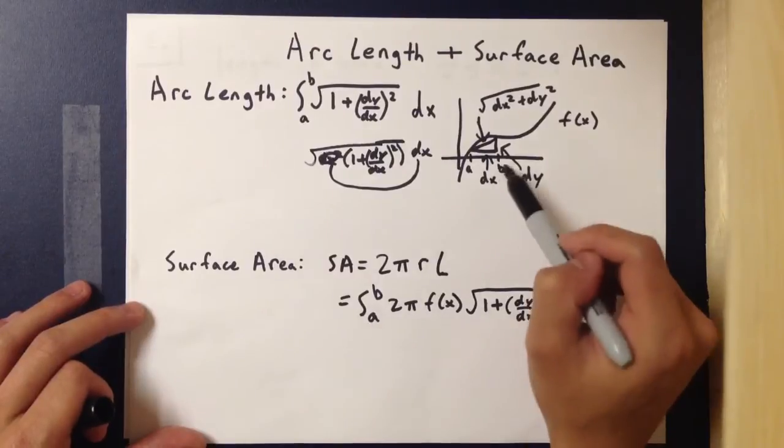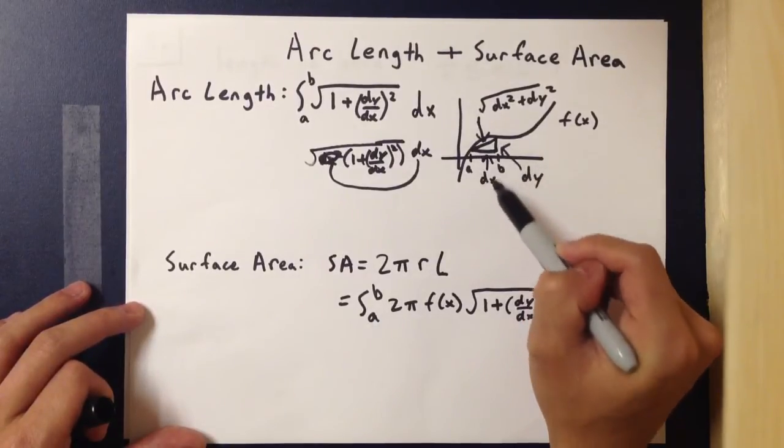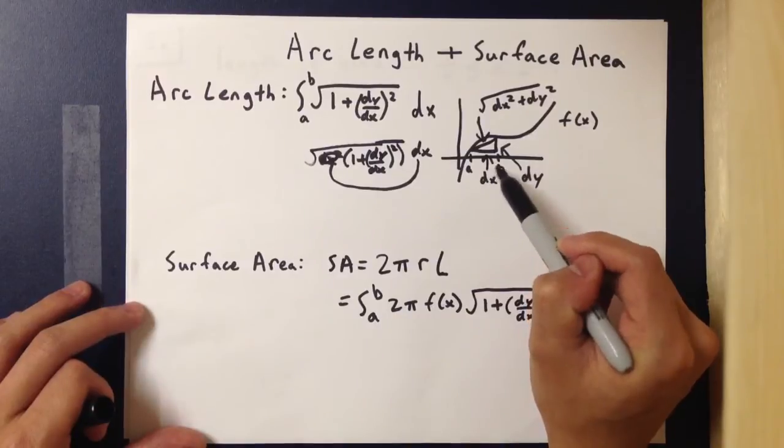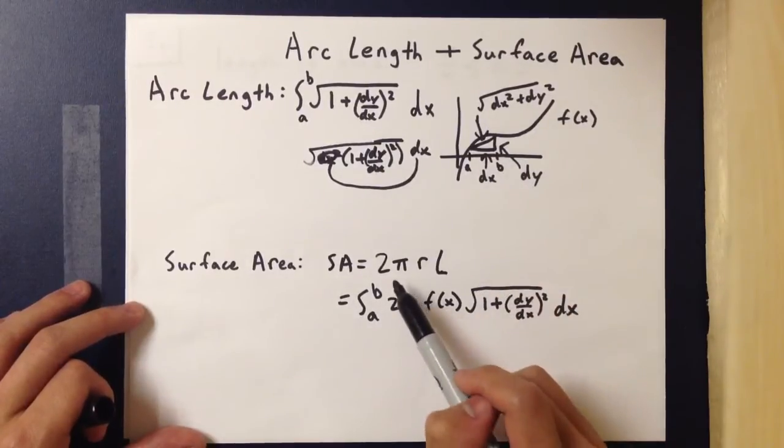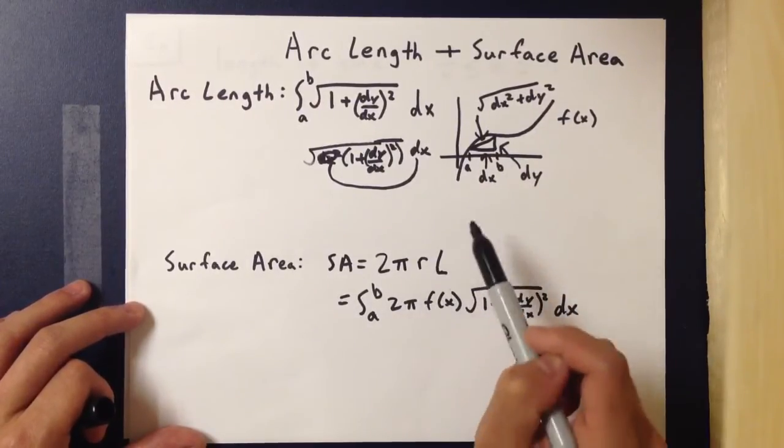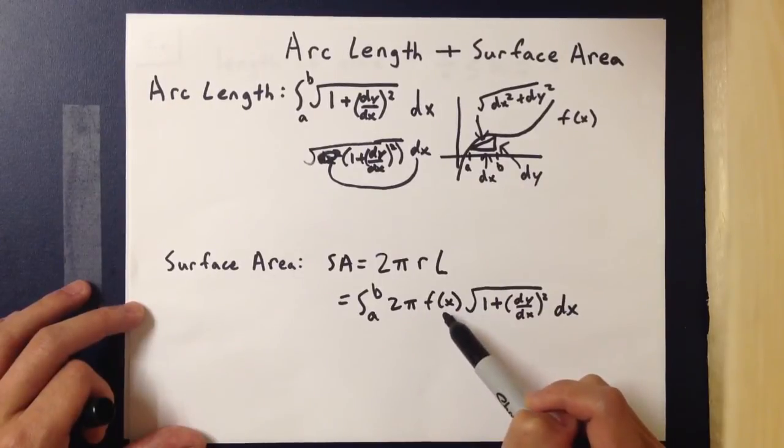So if you were to revolve this around, say, the x-axis, the surface area would be 2π times f(x), and then multiplied by the length with respect to x.